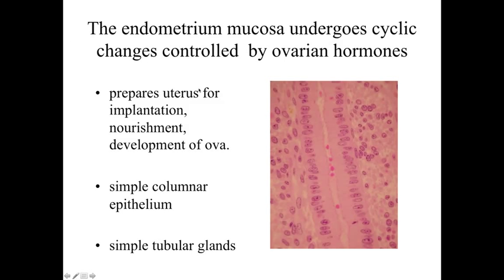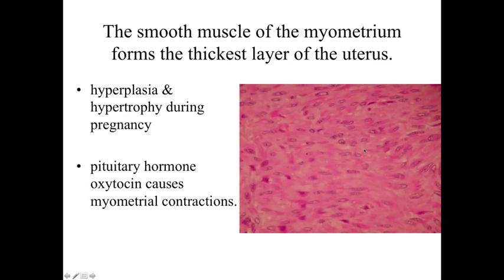The endometrium mucosa is essentially the primary region of the uterus that will receive the embryo during implantation and nourish and develop it throughout embryonic and fetal development. It's lined by a simple columnar epithelium, and those cells are organized into simple tubular glands. Deeper to the endometrium is the myometrium — the muscle cell layer — which is the thickest layer of the uterus.